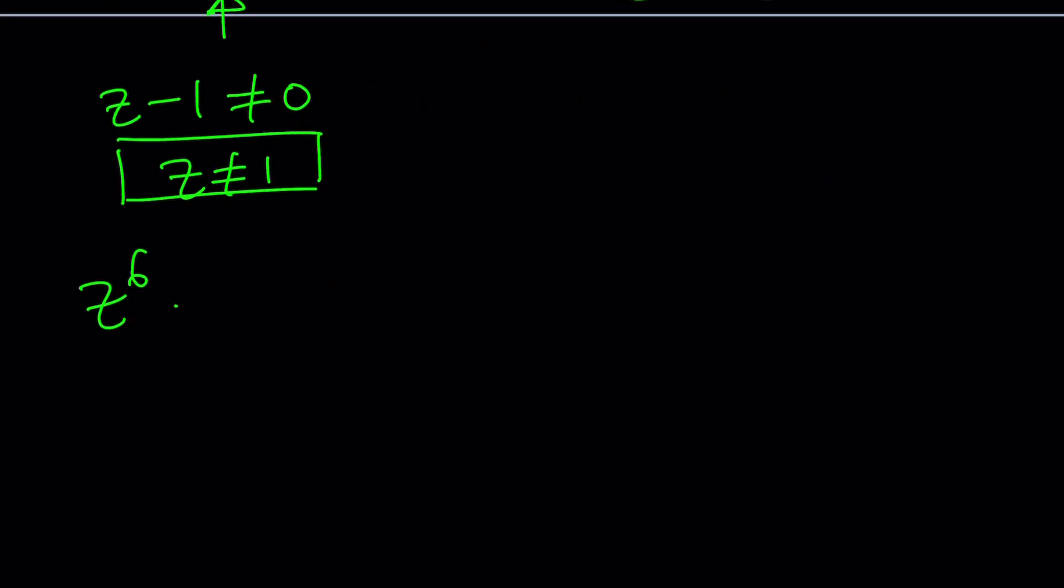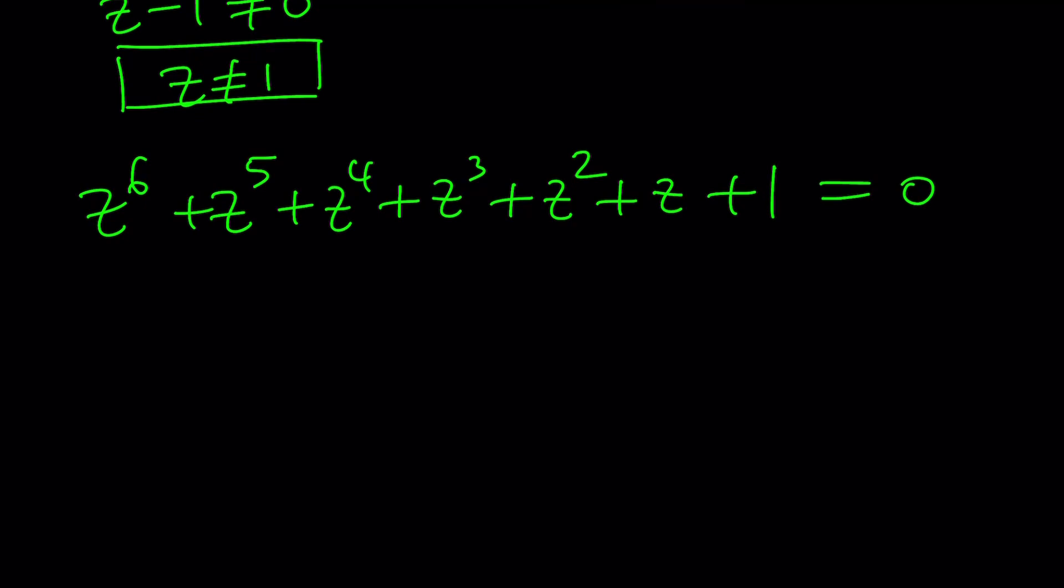So we're going to set this equal to 0 then. We have our new hexic, hectic equation. Z to the 6th plus Z to the 5th plus Z to the 4th plus Z to the 3rd plus Z to the 2nd plus Z plus 1. A really long equation. And there's no formula. On my other channel, I already said that there's no quintic formula. Is there a hexic formula? Nope, not at all. After 5, starting with the 5th degree, unfortunately, there are no general solutions in terms of elementary functions.